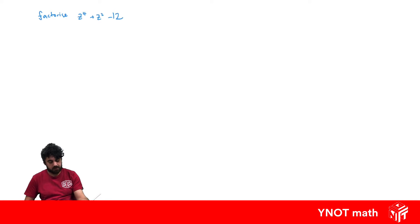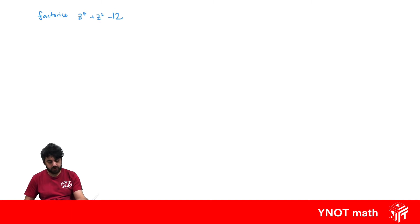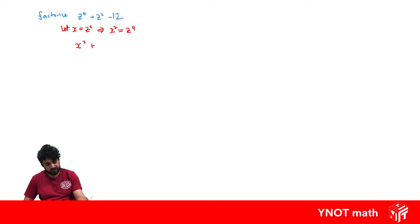Let's think about this as an equation reducible to quadratics. If we let x equals z squared, that implies x squared equals z to the 4. We can substitute those in, so we get x squared plus x minus 12 as our quadratic equation.